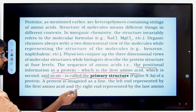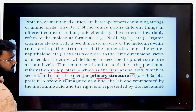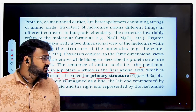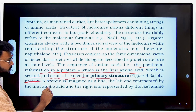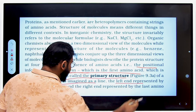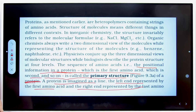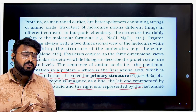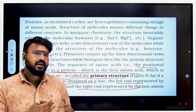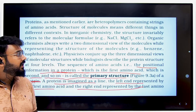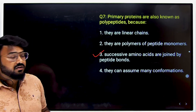The NCRT explains that the positional information in a protein — which amino acid is first, second, and so on — defines the primary structure. A protein is imagined as a line with the first amino acid at the left end and the last at the right. When amino acids are joined by peptide bonds in a chain, it forms a polypeptide, which gives rise to proteins.